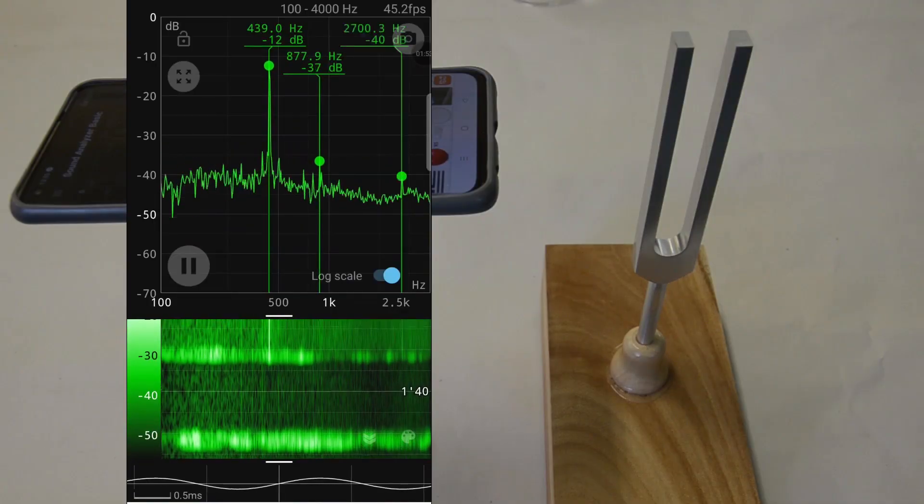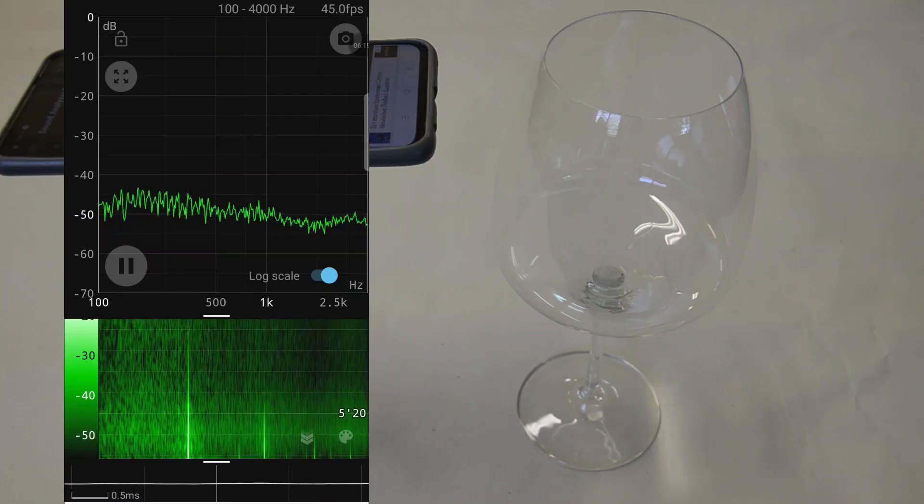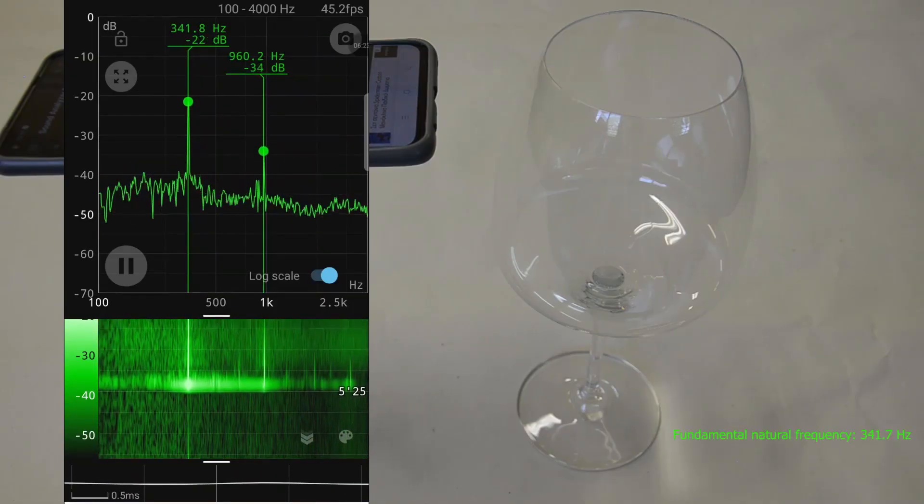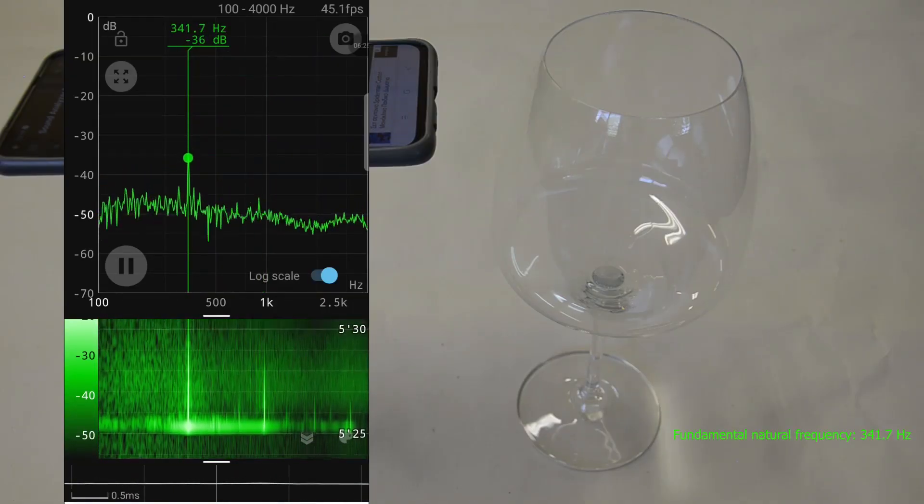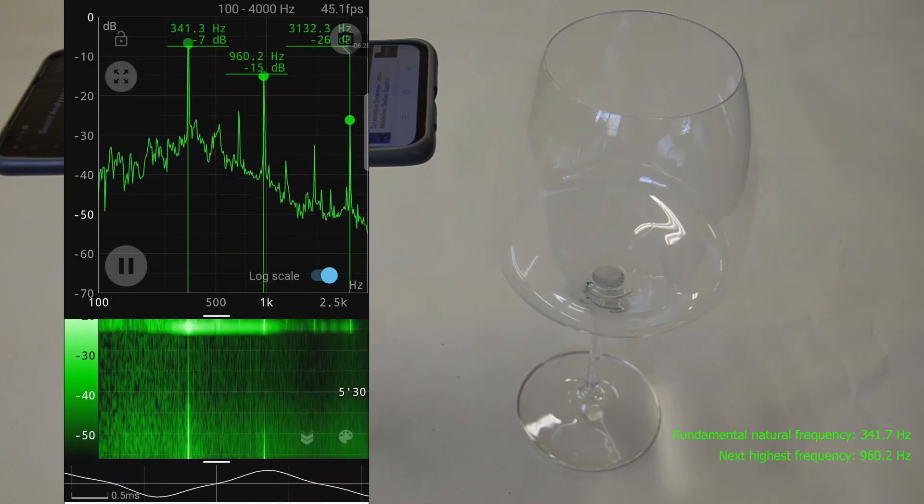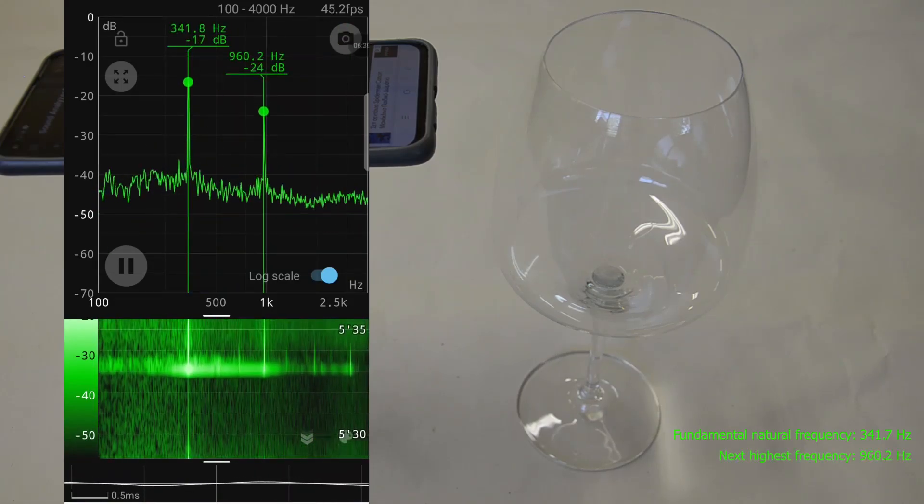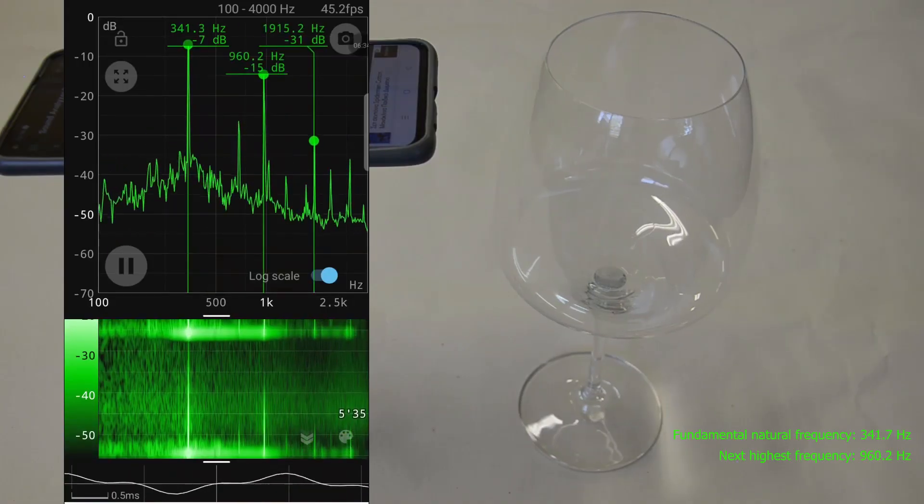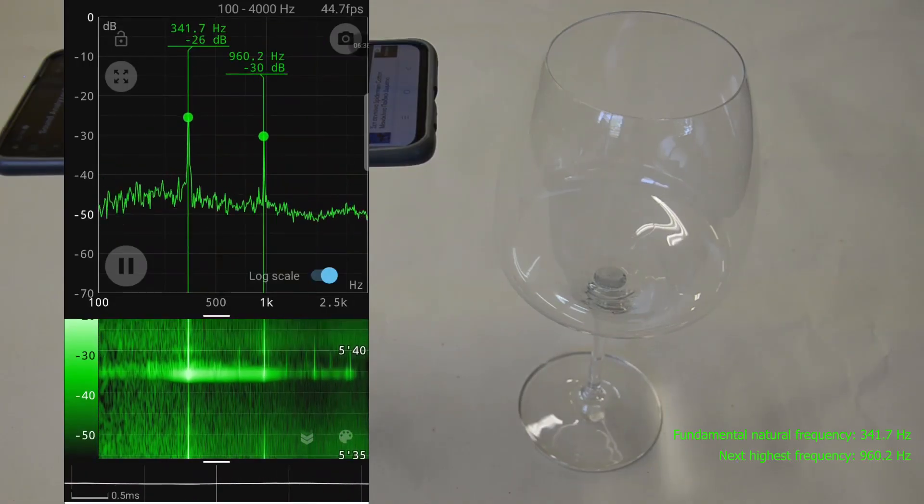In correspondence with the tuning fork, by striking the illustrated wine glass we measure the fundamental natural frequency at 341.7 Hertz and the next highest at 960.2 Hertz. Note that the highest mode frequency is not a multiple, namely a harmonic, of the fundamental frequency.